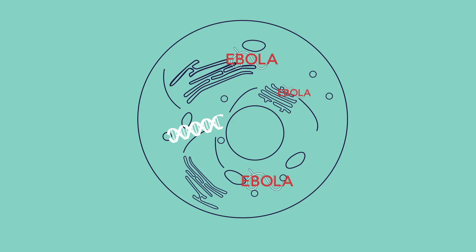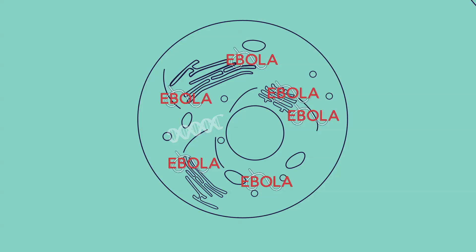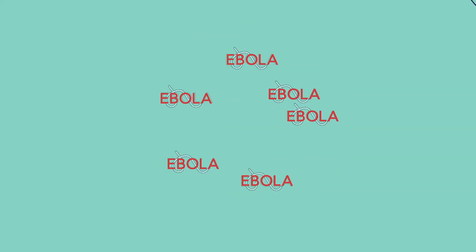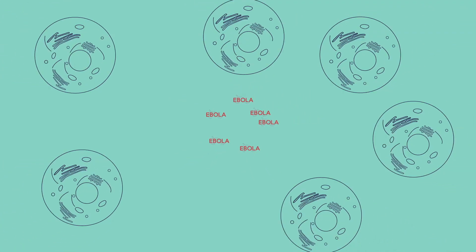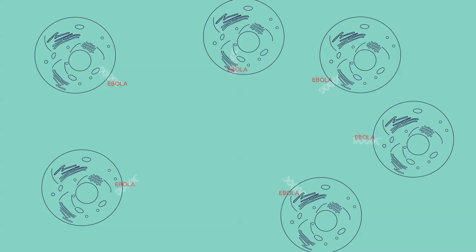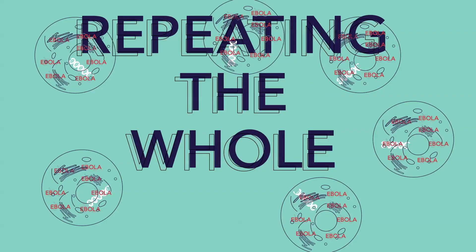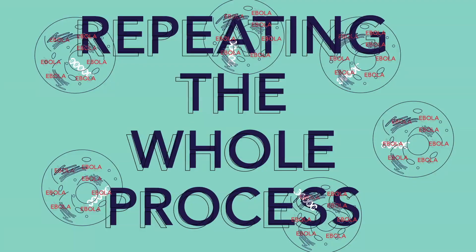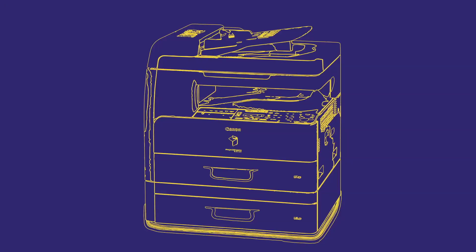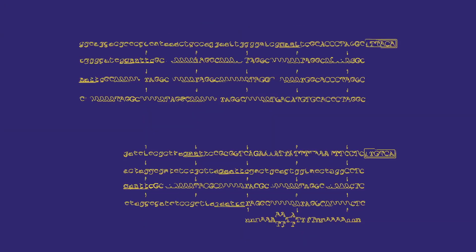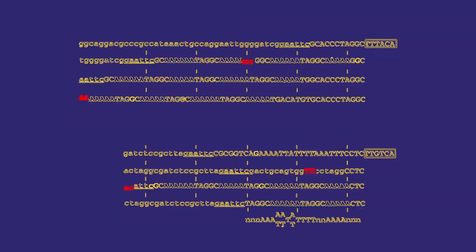Ebola's DNA has now tricked the hijacked cell. The cell's own machinery begins to make copies of the virus. Eventually the cell dies, releasing thousands of new Ebola viruses into the body, which go on to infect and kill more cells, repeating the whole process. Just like a photocopy of a photocopy will have mistakes, all this copying introduces errors, also called mutations, within Ebola's DNA.